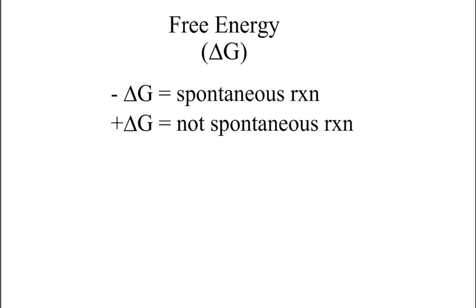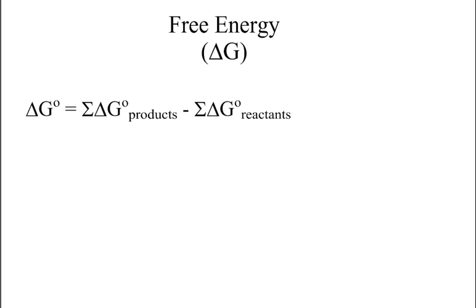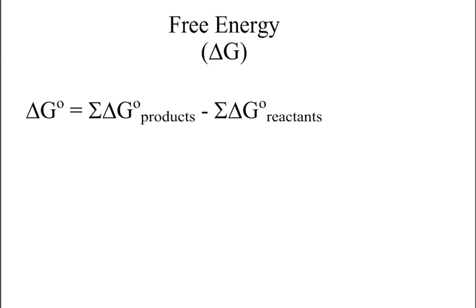There are several different formulas for finding Delta G. You can use what your textbook refers to as the Big Mama equation, which is just like the Big Mama equation for Delta H and Delta S — it is the sum of the standard free energy of your products minus the sum of the standard free energy of your reactants. Remember, any time that you have an element, its Delta H is going to equal zero, as well as its Delta G will equal zero.